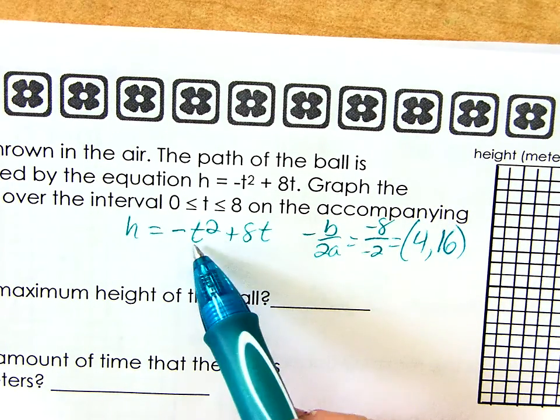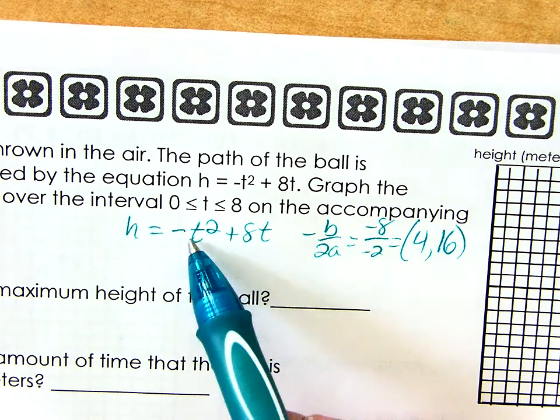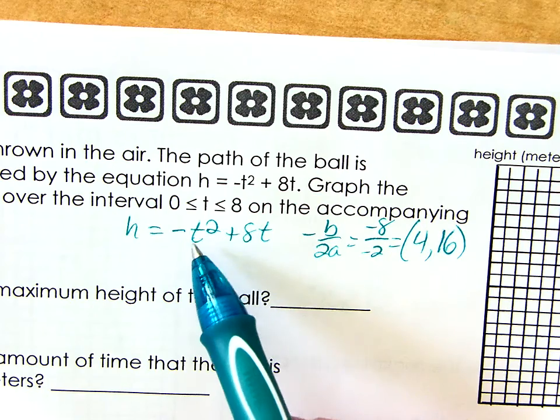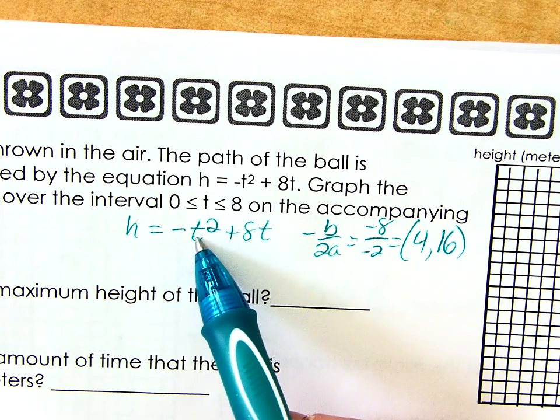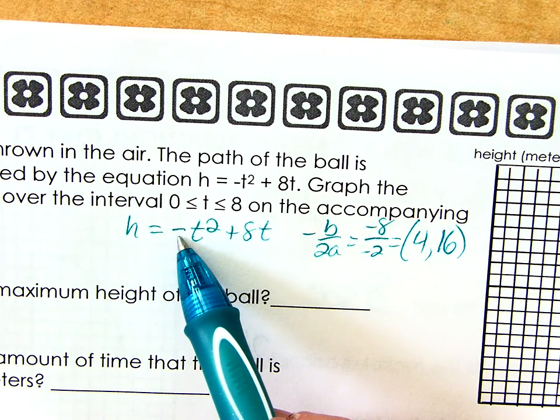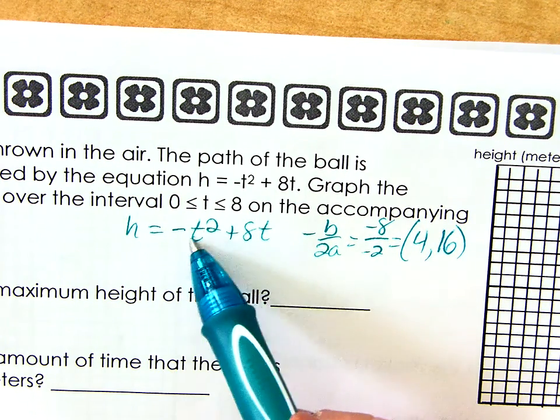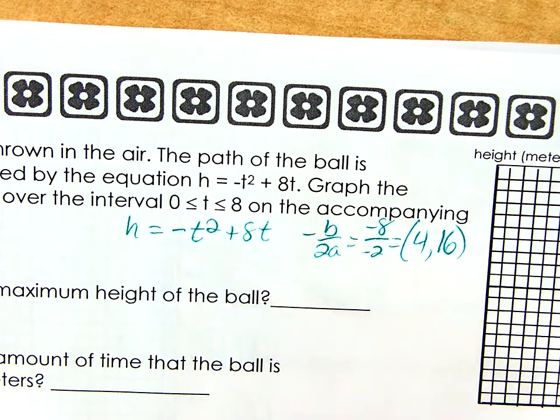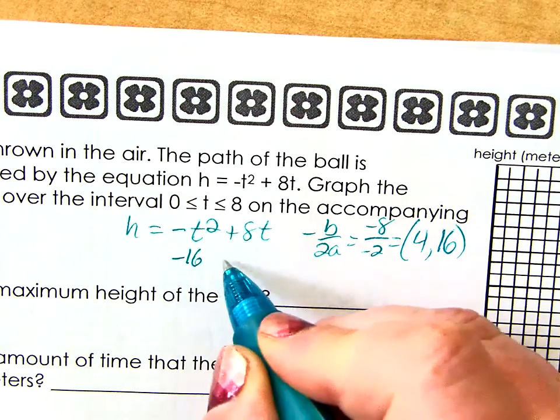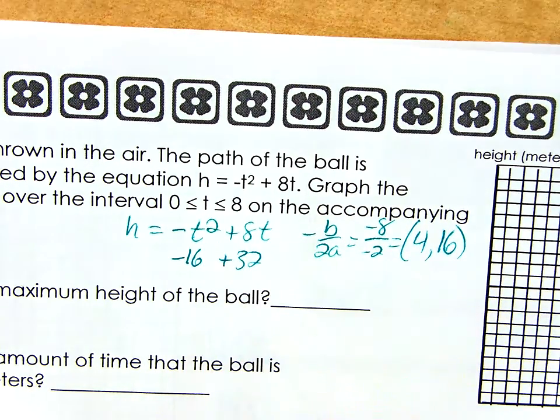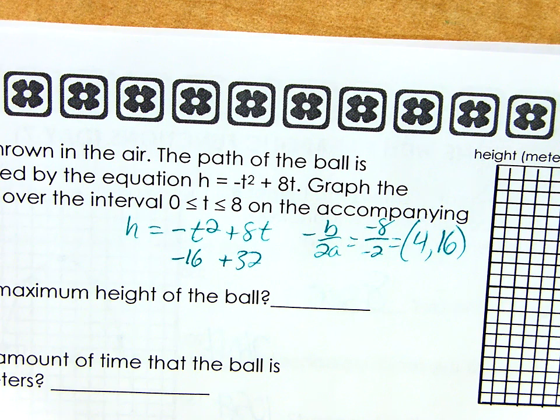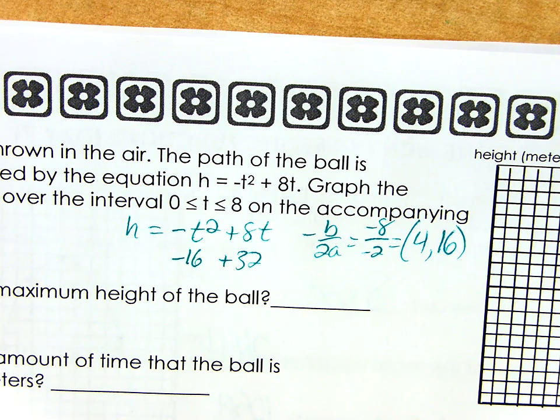16 it should be. If you got 48, it's this same thing that you're messing up on. When you plug in 4, this means do 4 squared and then take the opposite. This does not mean negative 4 squared. It means 4 squared, which is 16. Take the opposite. It's negative 16 plus 32. That's how I'm ending up at a positive 16. Okay, so now I know where my vertex is, and I'm only graphing this between 0 and 8.